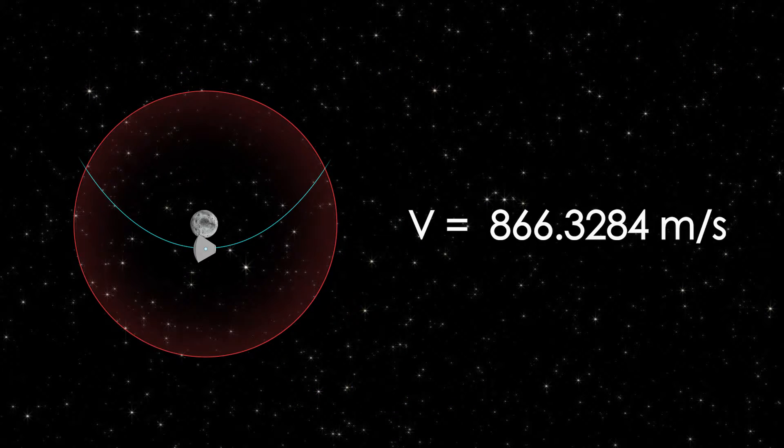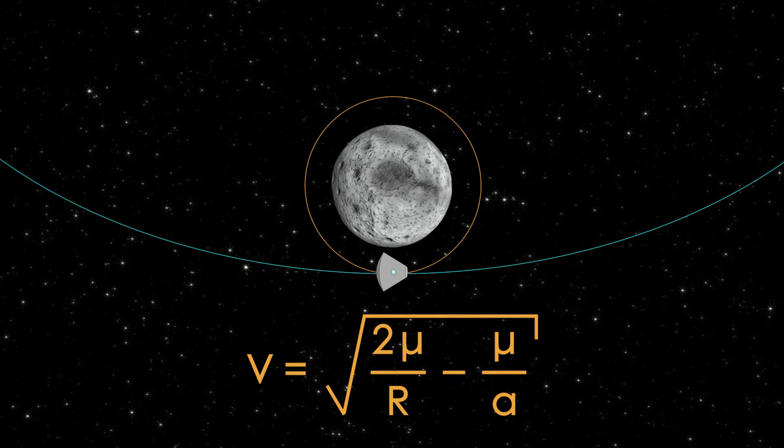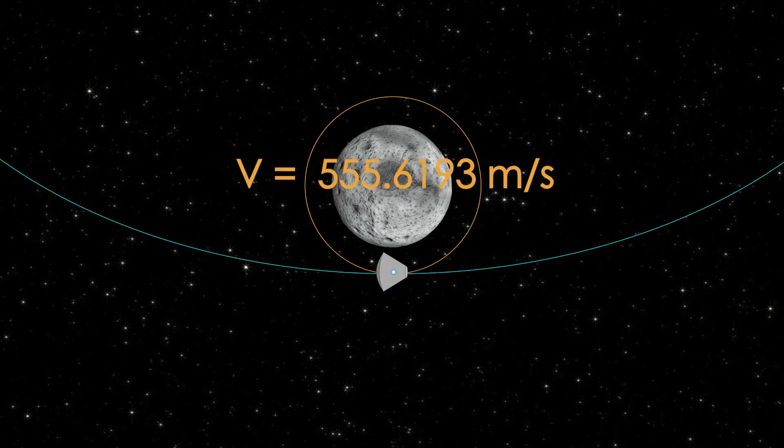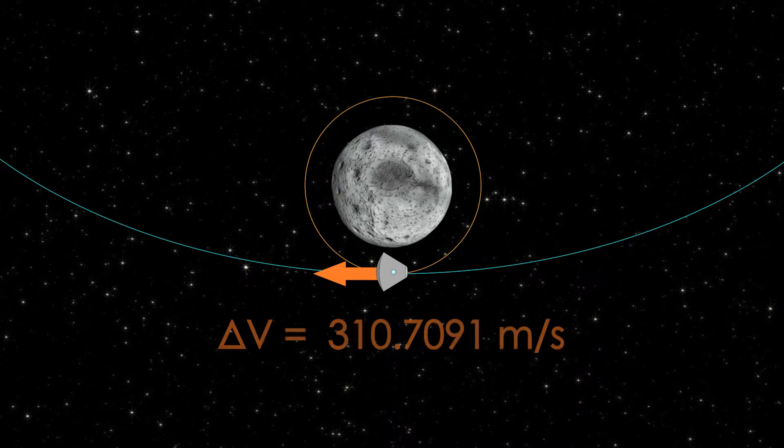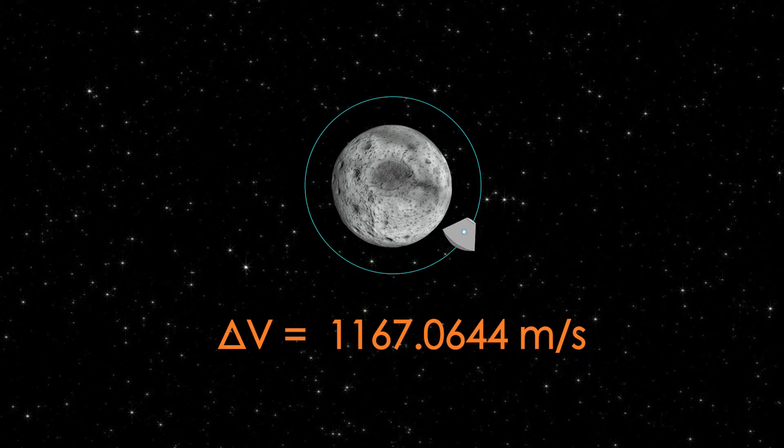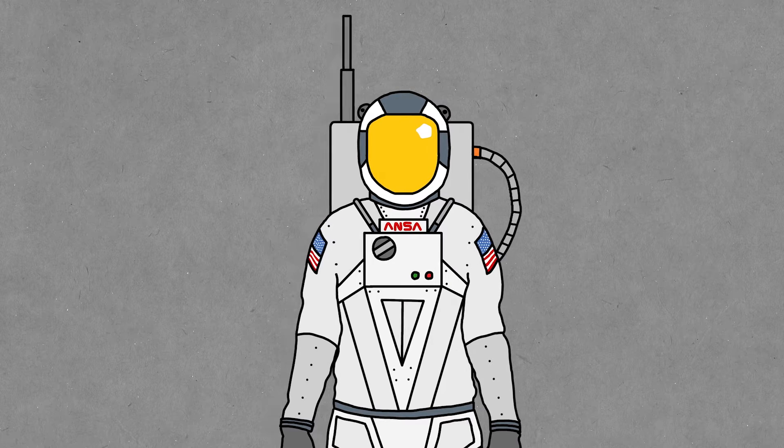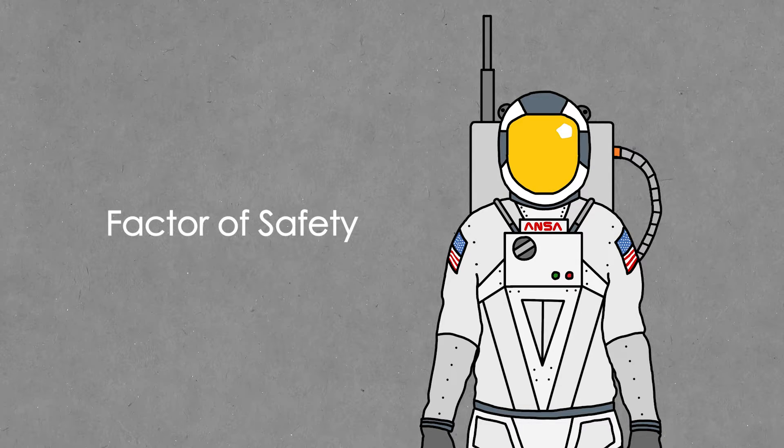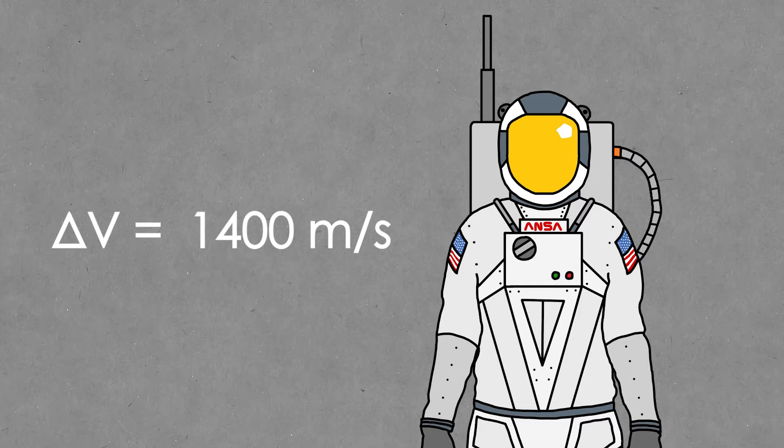Now, to calculate the delta-v for our braking burn, we use the old equation to find the velocity of our final circular orbit, which comes out to 555.6193 meters per second. We take the difference, and we find that our second and final burn needs to be 310.7091 meters per second of delta-v. This brings the total budget for our mission to 1167.0644 meters per second. But this is making a lot of assumptions, so just in case anything goes wrong, we should use a factor of safety. I'm trying to challenge myself, so I'm only going to be using a factor of 1.2. The official target is now an even 1400 meters per second of delta-v.